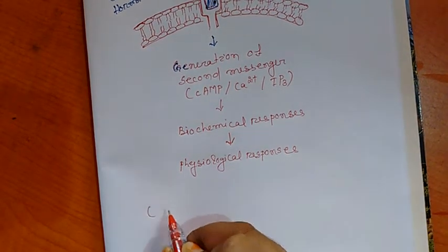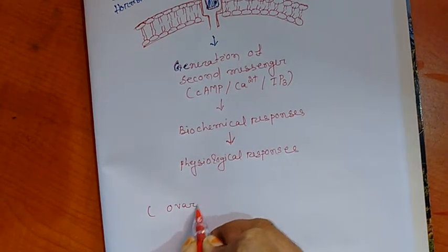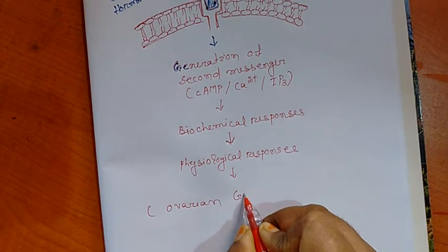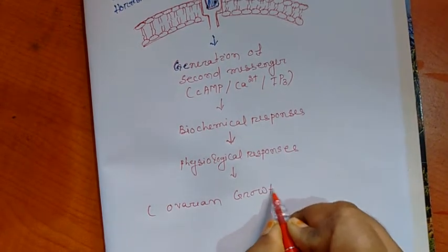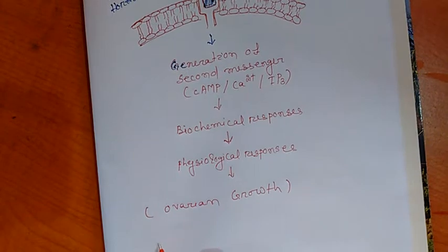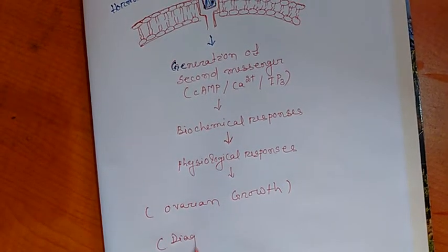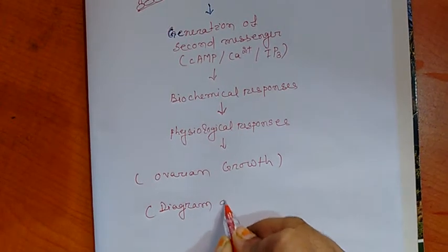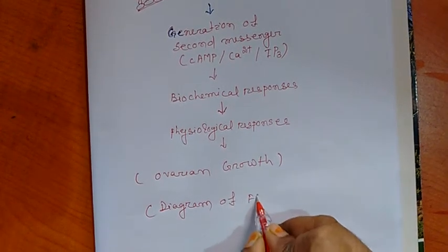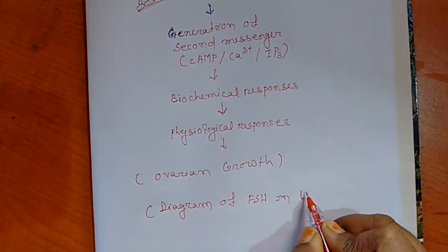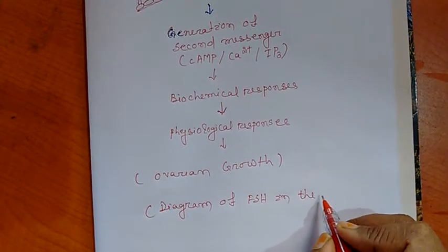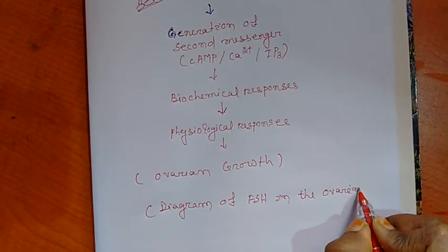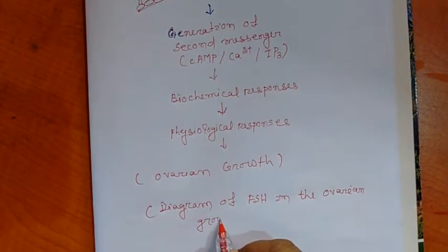This is all about the ovarian growth. This is the diagram of FSH hormone in the ovarian growth.